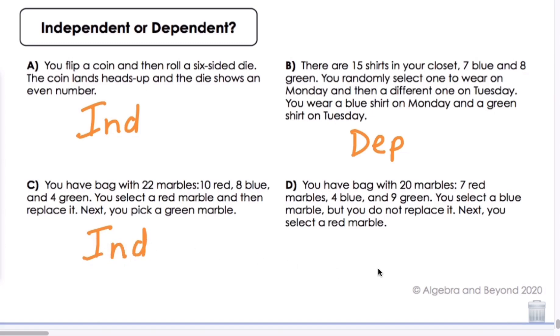Let's look at Scenario D. You have a bag with 20 marbles, 7 red marbles, 4 blue, and 9 green. You select a blue marble, but you do not replace it. Next, you select a red marble. These will be dependent, because the blue marble is gone, and there's less marbles in the bag, so we have to take that into consideration. And that's the difference between independent and dependent.